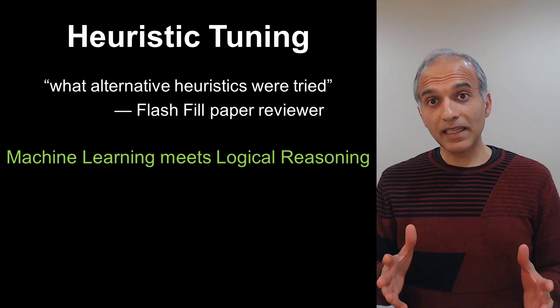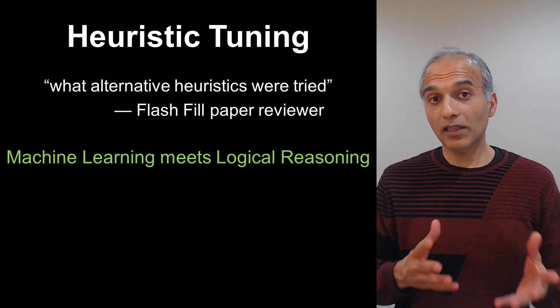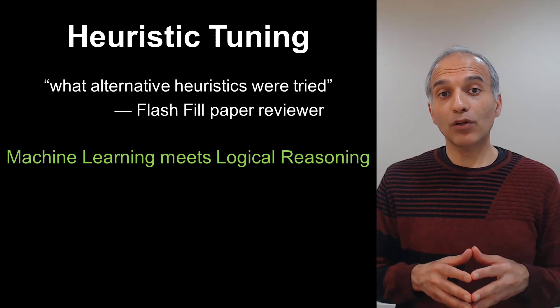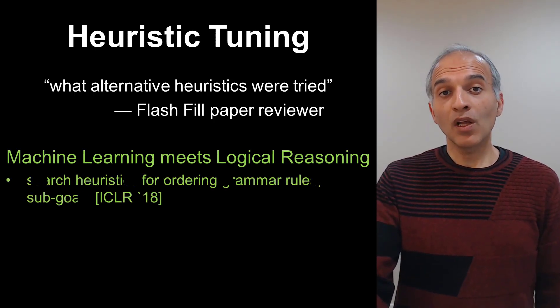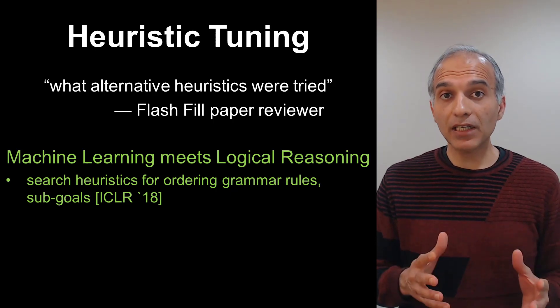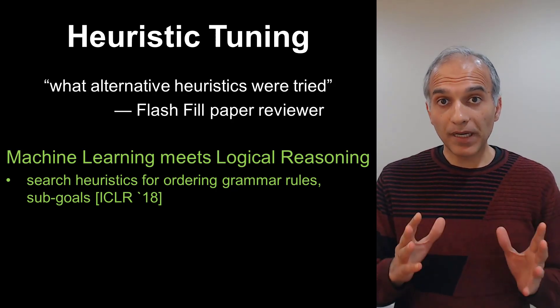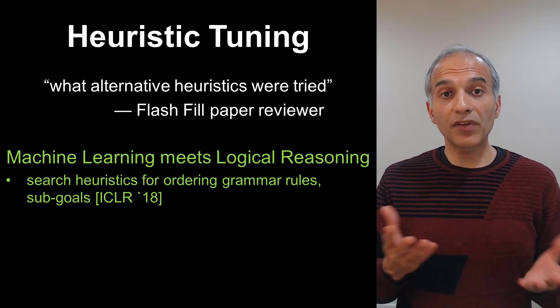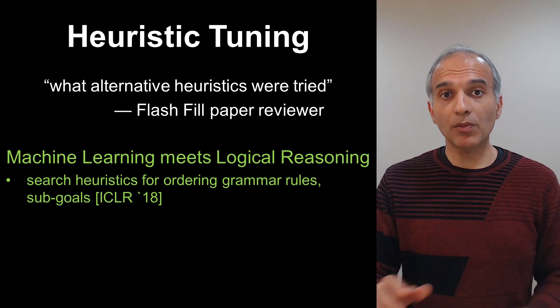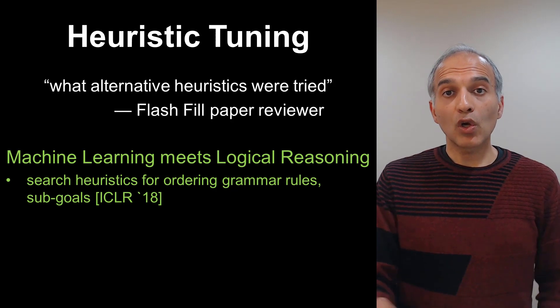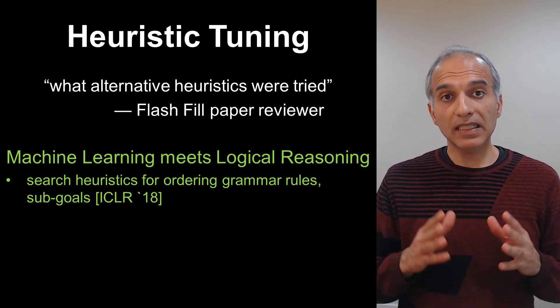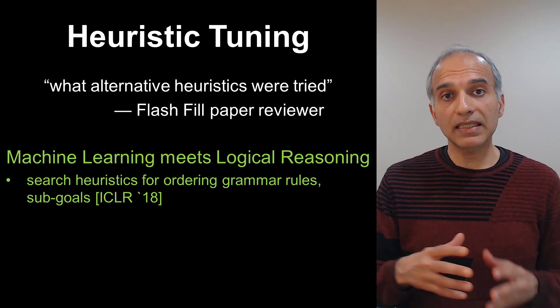So this inspired us to use machine learning techniques to learn heuristics for speeding up search and to improve effectiveness of ranking. Interestingly, this is also reminiscent of feedback from a reviewer on the Flash Fill paper who saw far ahead and questioned the use of manual heuristics. For speeding up search, we now use machine-learned heuristics to order the search goals generated by the top-down backpropagation-based reductive search — for instance, which grammar production or which sub-goal resulting from inverse semantics to try out first. We have obtained an order of magnitude improvement in speedup on certain task instances in our benchmark suite.